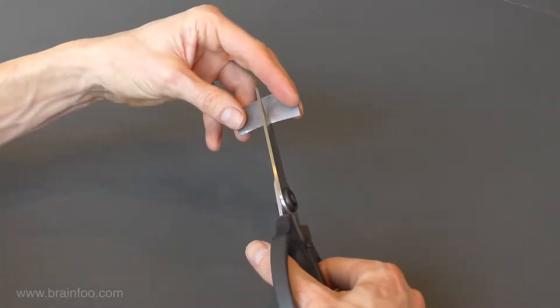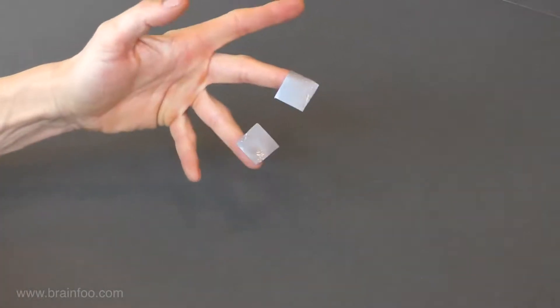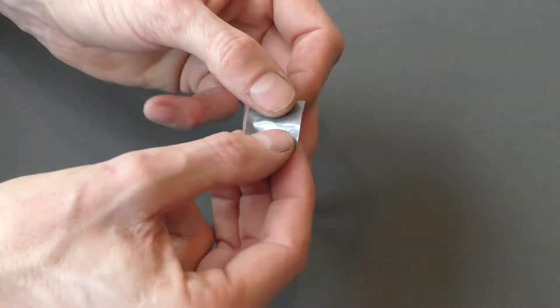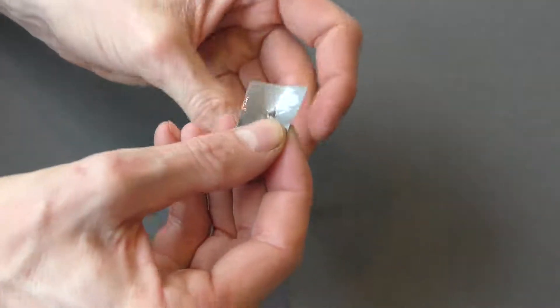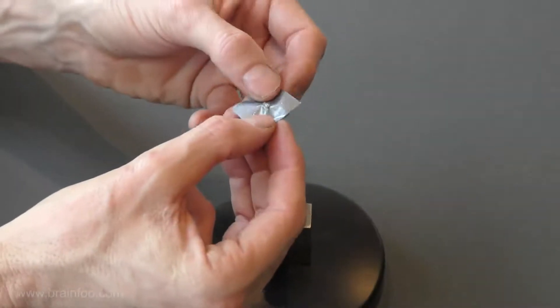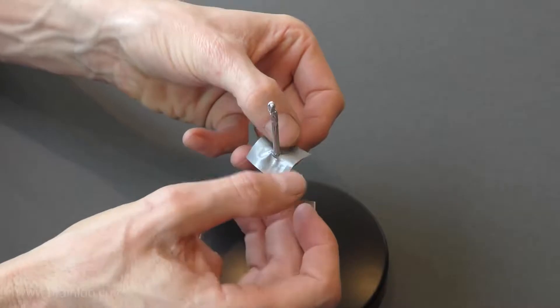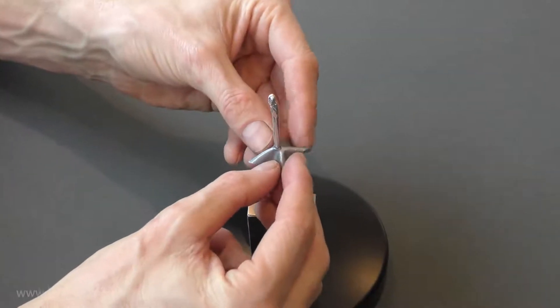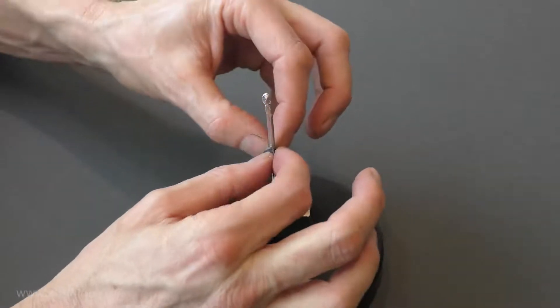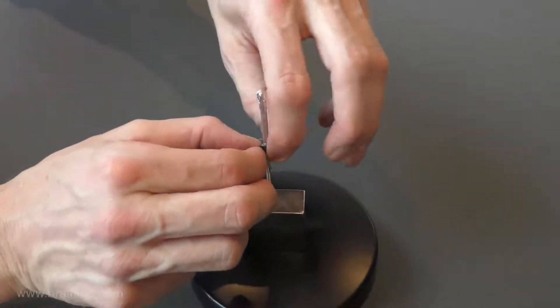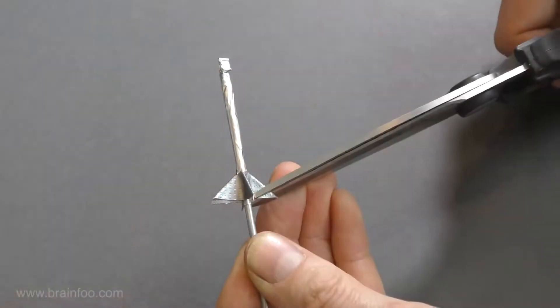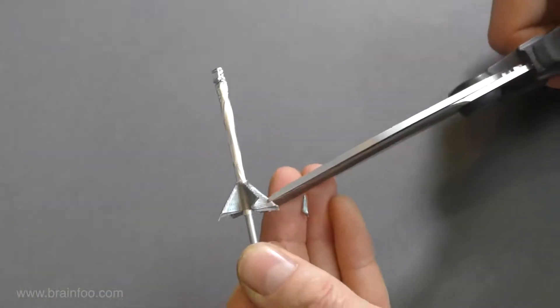If you do want some fins though it couldn't be easier. Cut a small square of tape then punch a hole in the middle. Slip the tape over the top of the casing and down to the base. Then a simple corner to corner fold on both corners completes the basic shape. Trim back any excess tape and you're good to go.